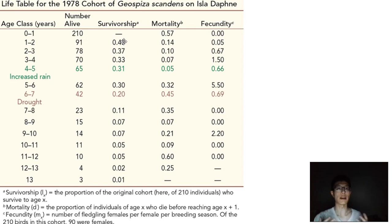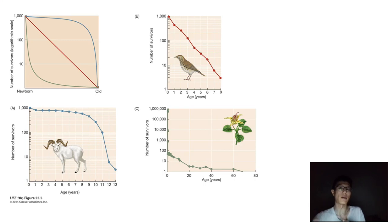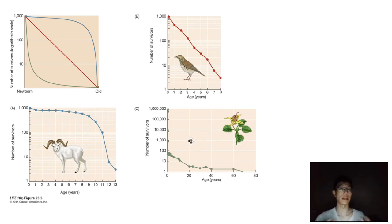It's important to understand what survivorship means, what mortality means, what fecundity is, and what a life table does. As a side note, you can take information from your life tables and plot them out over time to find survivorship curves of these organisms. These survivorship curves are very interesting and important for understanding the ecological life history of the organism, some behavioral aspects, as well as approaches to conserving some of these species.